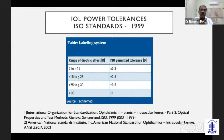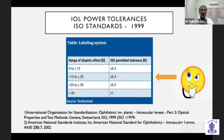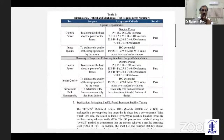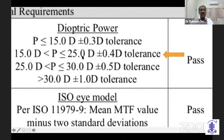My next topic is on IOL power tolerances. It is interesting that all of our lenses are made as per ISO standards which were defined in 1999. For the usual lens with power between 15 and 25 diopters, they permit a 0.4 diopter of error and still pass the lens. This is the actual FDA approval for a multifocal lens approved in 2014, which is widely used in various parts of the world. The FDA used the same criteria — 15 to 25 diopter range — and tested whether the spherical equivalent was within 0.4 diopter, and passed this lot of lenses.